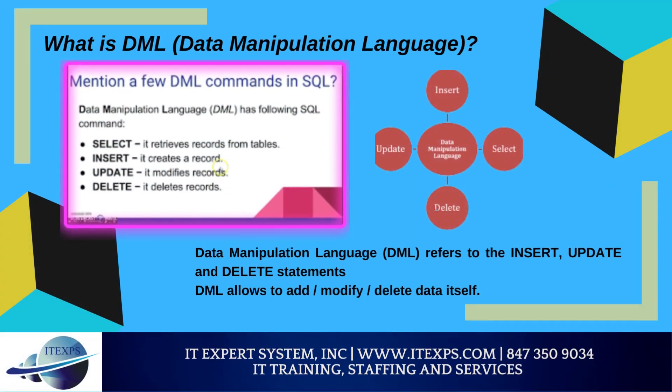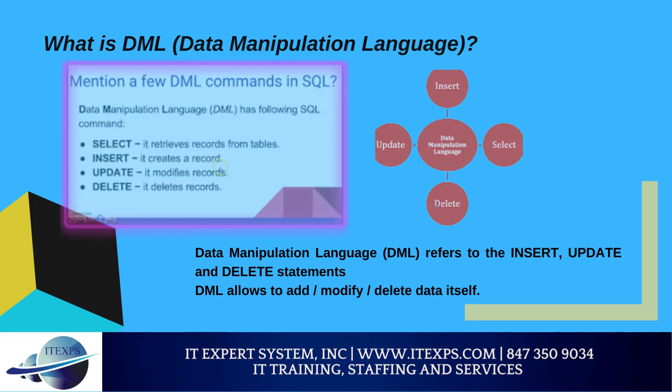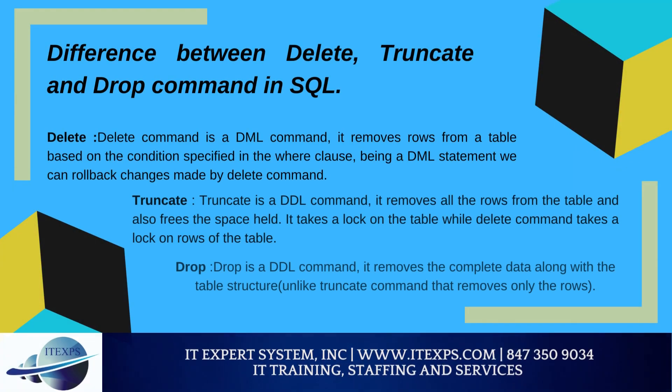What is DML? Data Manipulation Language (DML) refers to the INSERT, UPDATE, and DELETE statements. DML allows you to add, modify, and delete data itself. What is the difference between DELETE, TRUNCATE, and DROP? Delete is a DML command — it removes rows from a table based on the condition specified in the WHERE clause, and being a DML statement we can roll back changes made by the DELETE command. Truncate is a DDL command — it removes all the rows from the table and frees the space held; it takes a lock on the table, while DELETE takes a lock on rows. Drop is a DDL command — it removes the complete data along with the table structure, unlike TRUNCATE which removes only the rows.